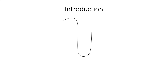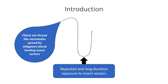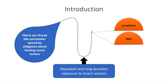The filaria are thread-like nematodes spread by obligatory blood-feeding insect vectors. Through repeated and long-duration exposure to these insect vectors, filaria may cause symptoms in the lymphatics, skin and eyes.